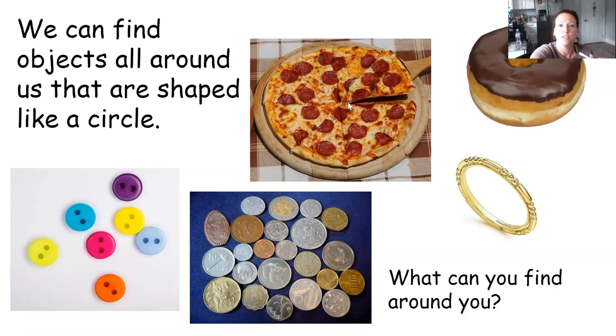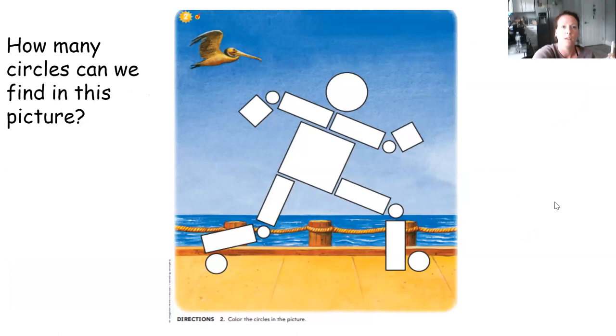You said triangle. You're right. So that is a triangle, but the whole pizza is a circle shape. Can you look around you and see if there's anything in the room you're in that is shaped like a circle? Take a look around.